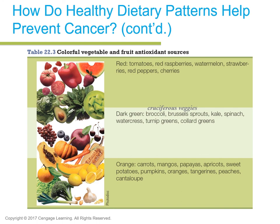This chart from your book shows colorful vegetable and fruit antioxidant sources. For the test, know about cruciferous vegetables — broccoli, Brussels sprouts, kale, spinach, watercress, turnip greens, collard greens, and cauliflower. They are called cruciferous because of their crisp, cross-like leaf shape when growing. They have very powerful antioxidant properties in regards to many cancers, especially breast cancer. They appear to turn off genes that promote oxidative stress and inflammation that can damage DNA, and can decrease overall cancer risk — and even decrease the chance of reoccurrence after recovery.